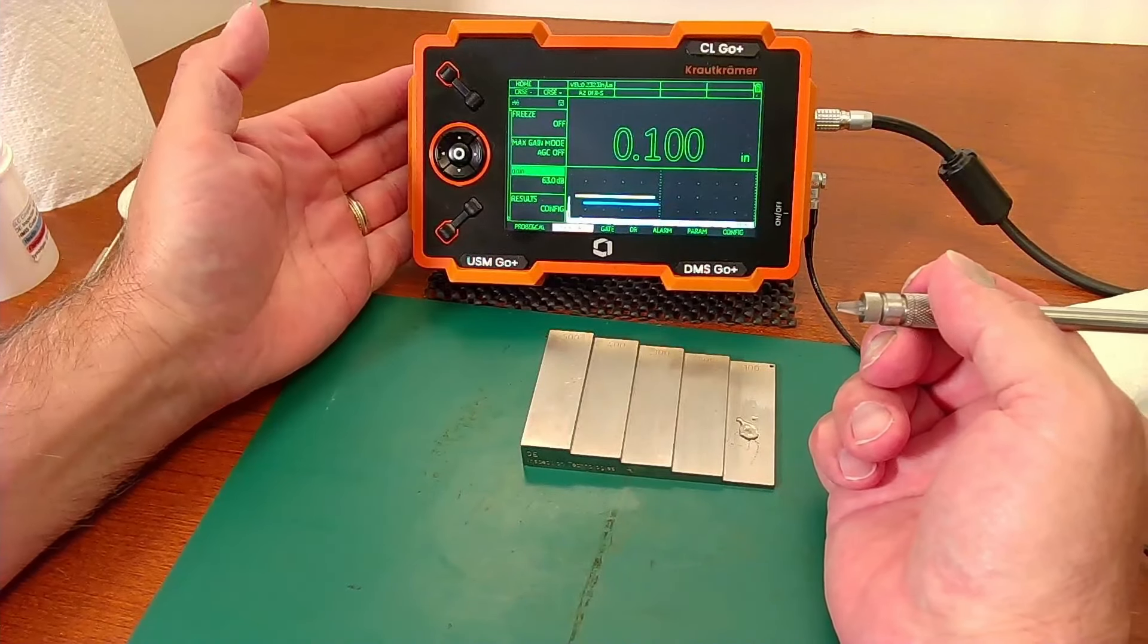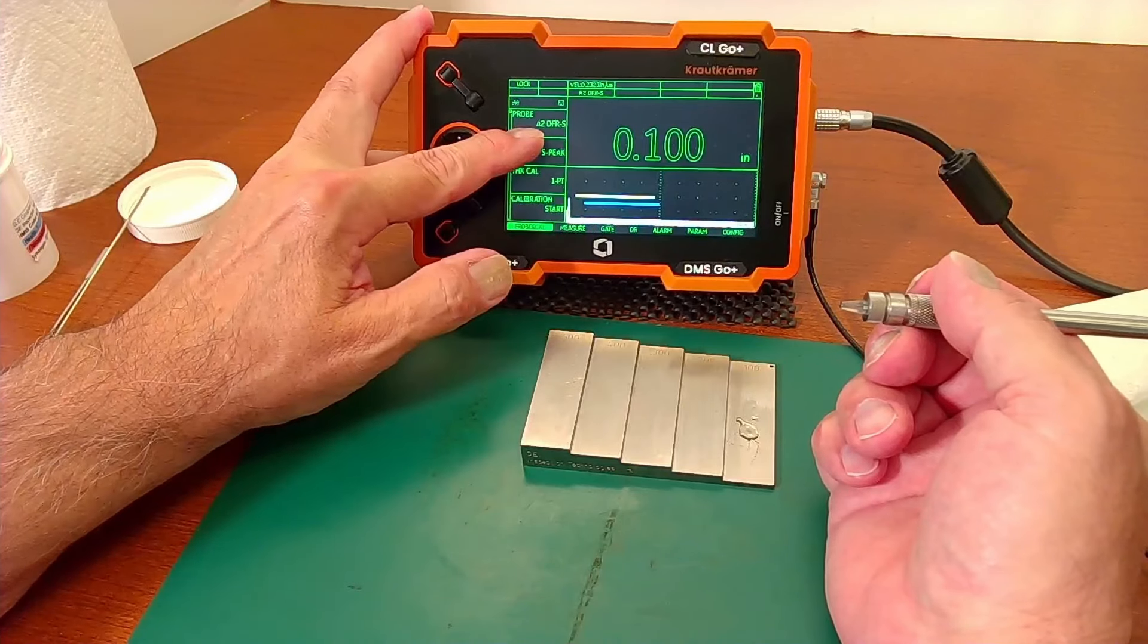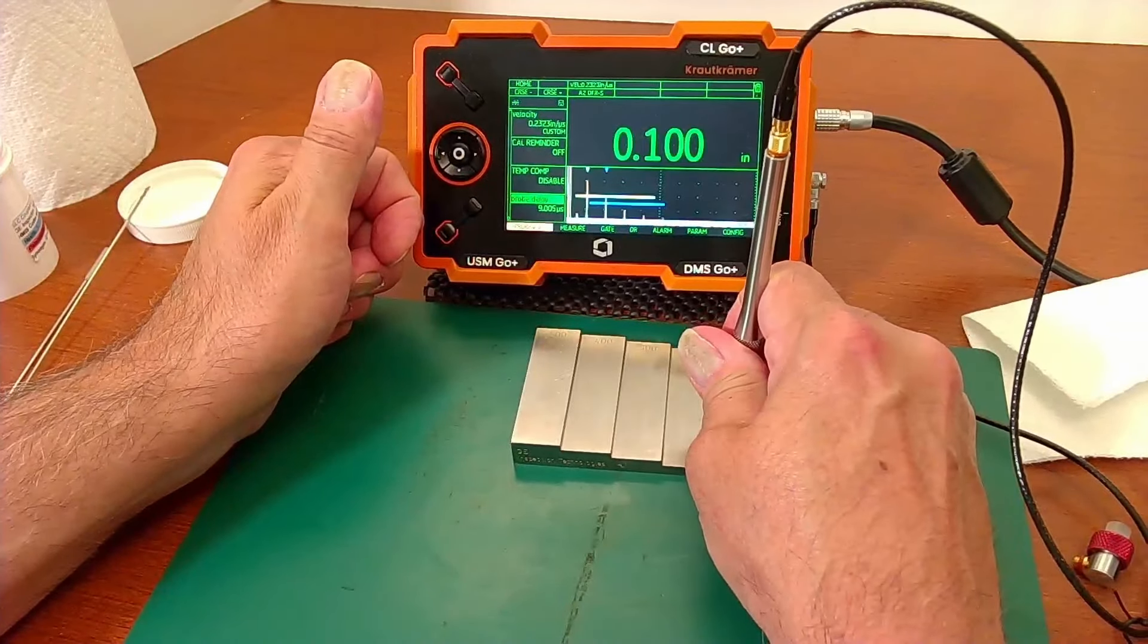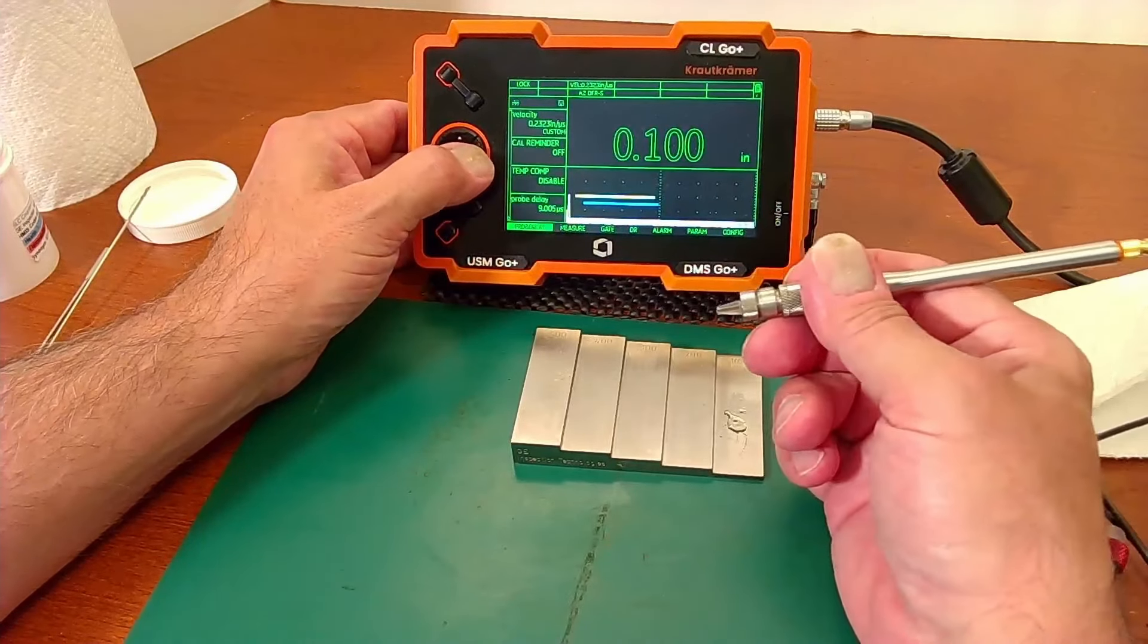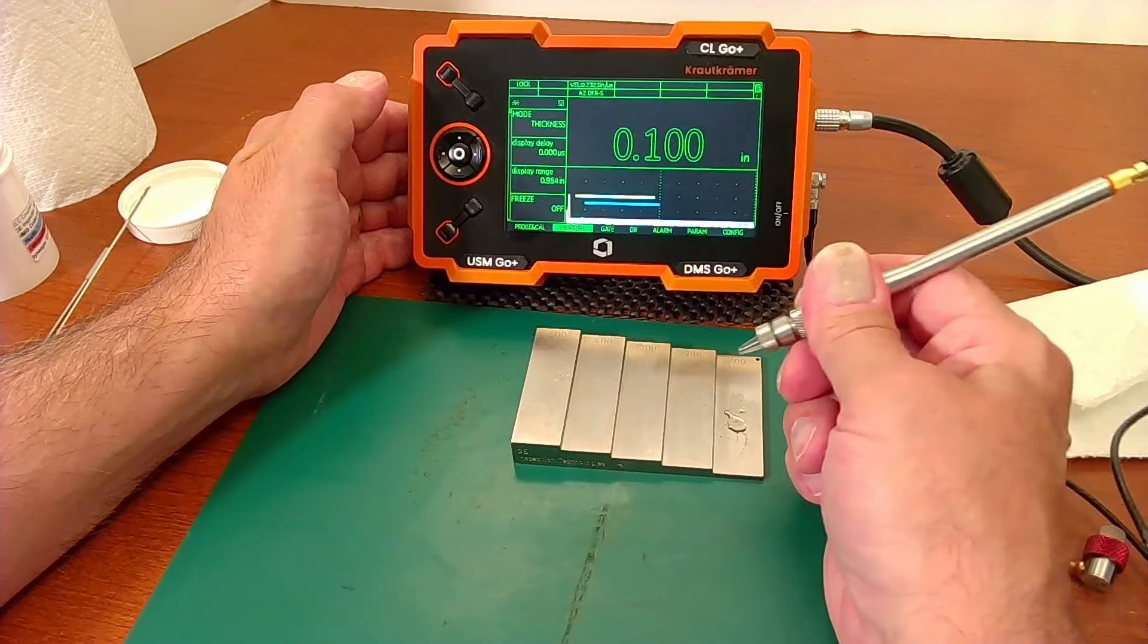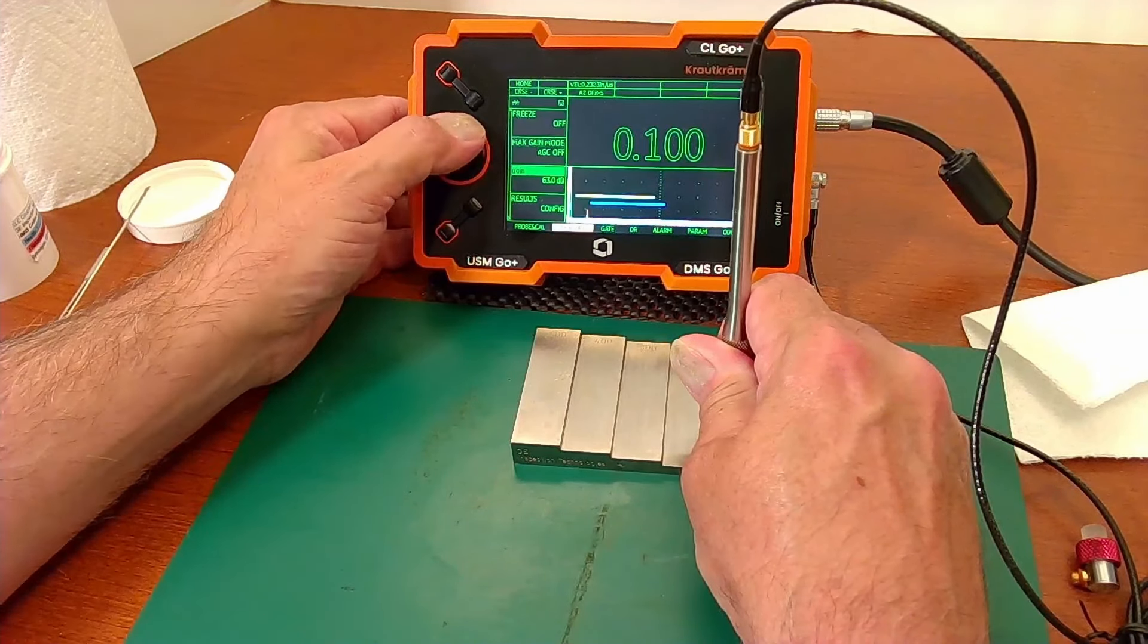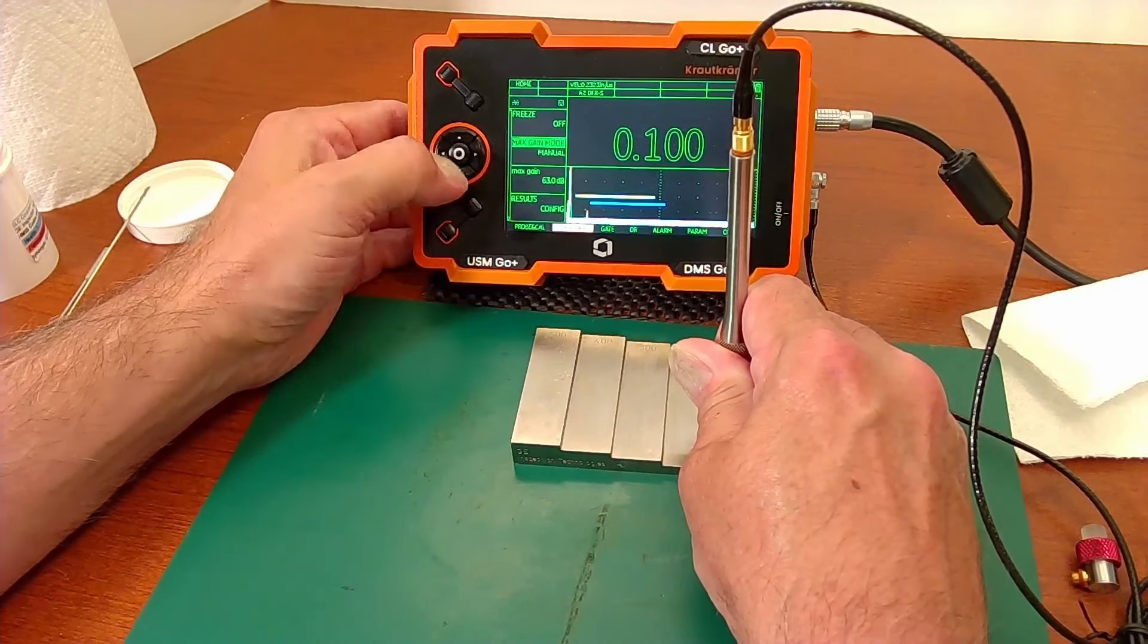I need to change my probe delay to get the interface echo over to the left edge of the screen, and then because the K-Pen has a different sensitivity compared to the Alpha 2, I need to make some adjustments to my gain. So I go to the measure menu, and I can either turn AGC off or I can go to manual mode and increase my max gain to mid 60s. And there we go.